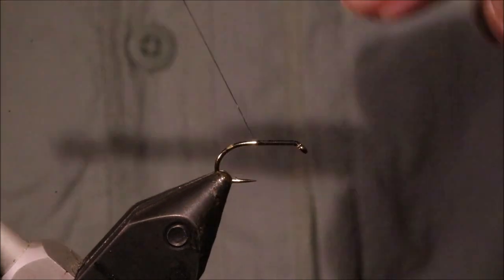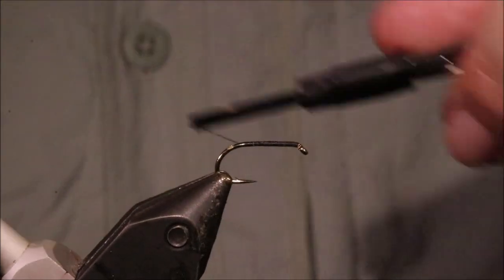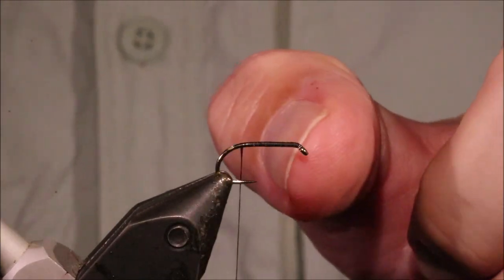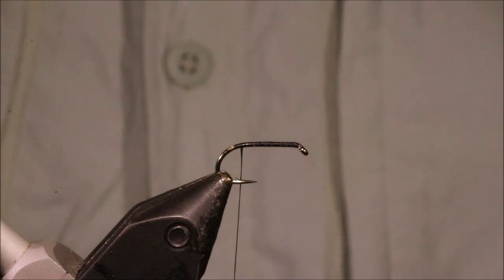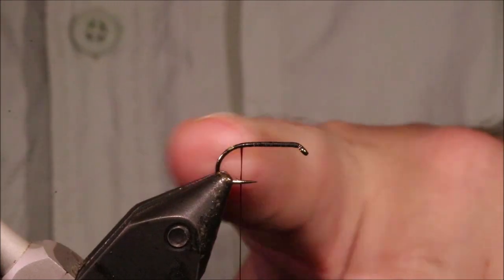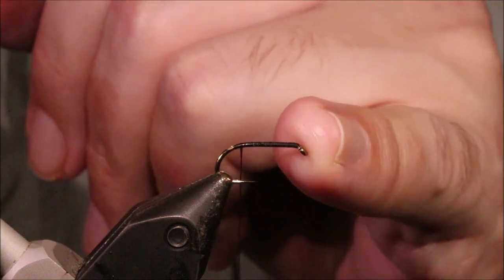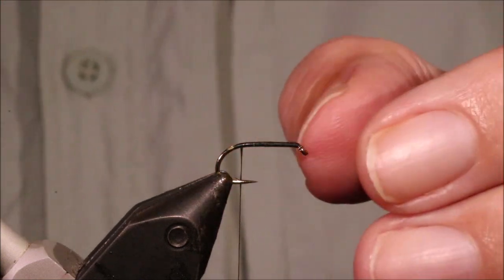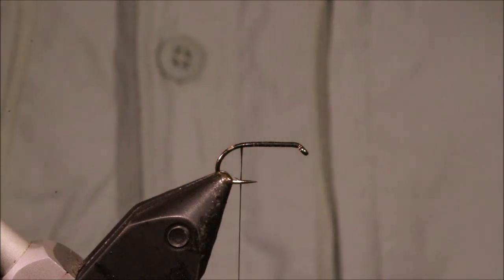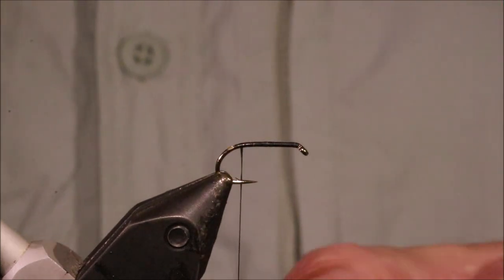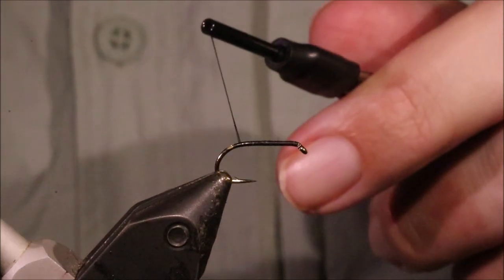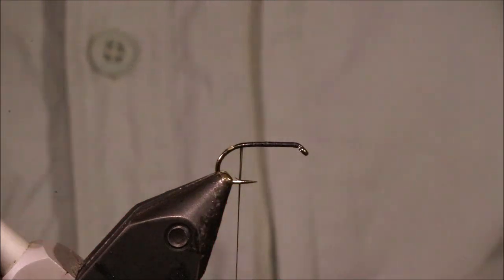So I've got my hook in my vise, this is a Kamasan B175 and this is a size 12. I don't really go any smaller than a 12, go up to a 6 for the sea trout but 8s, 10s, 12s probably the most commonly used. I've run on just some Uni 8-0 in black.